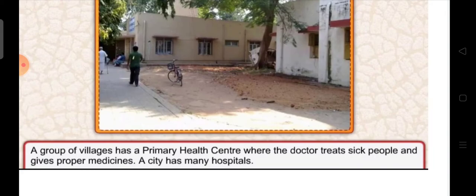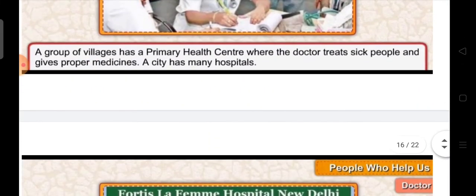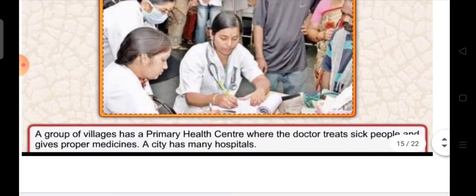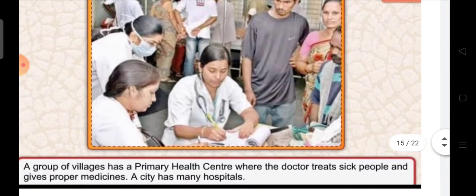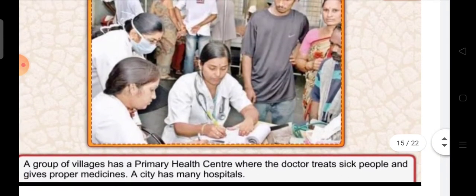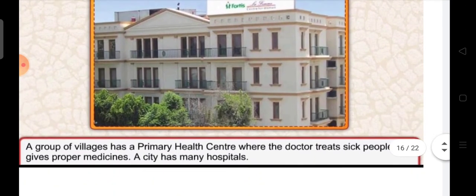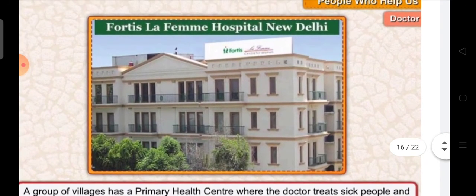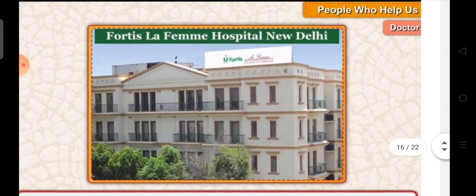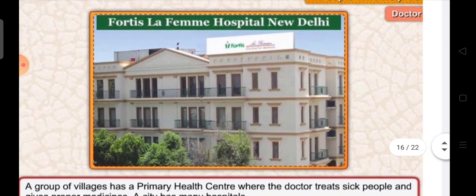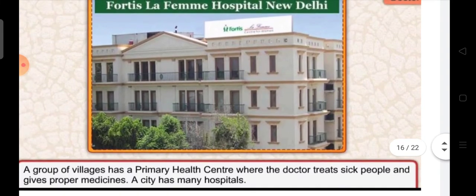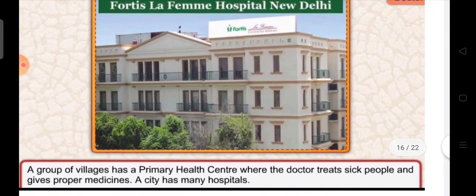A city has many hospitals. You can see in the picture a doctor is treating his patient. You can see the picture of Fortis La Fahime Hospital — it is in New Delhi. A city has hospitals more than one.